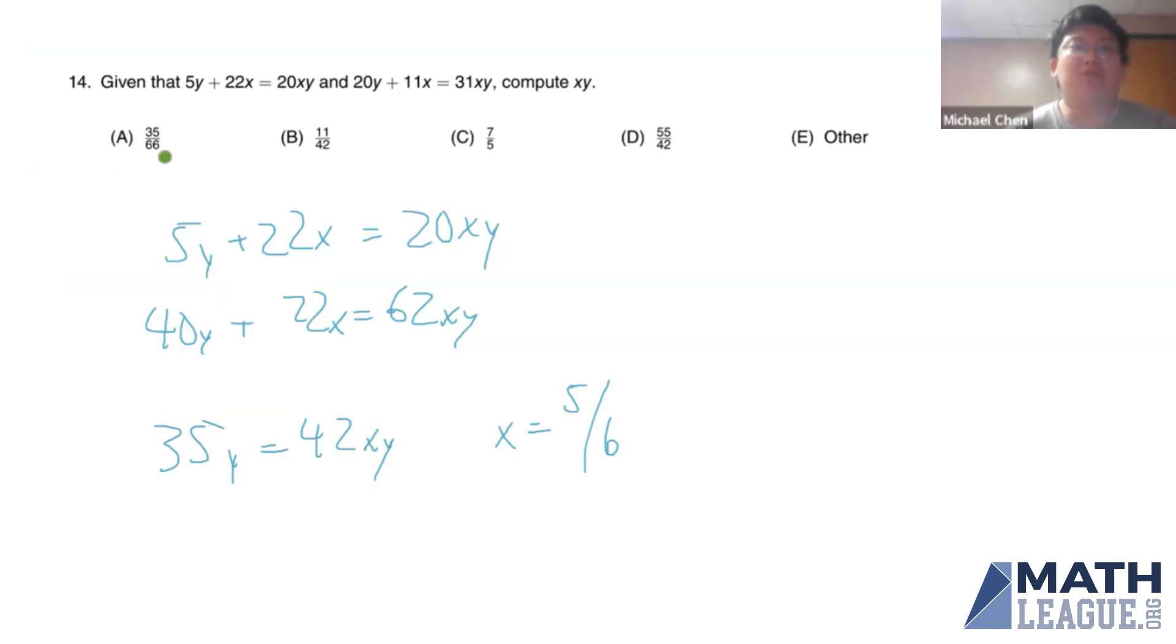I found it easiest to just eliminate the other way. Plugging in isn't that bad either. 5y plus 22 times 5 over 6 is equal to 20 times 5 sixth times y.